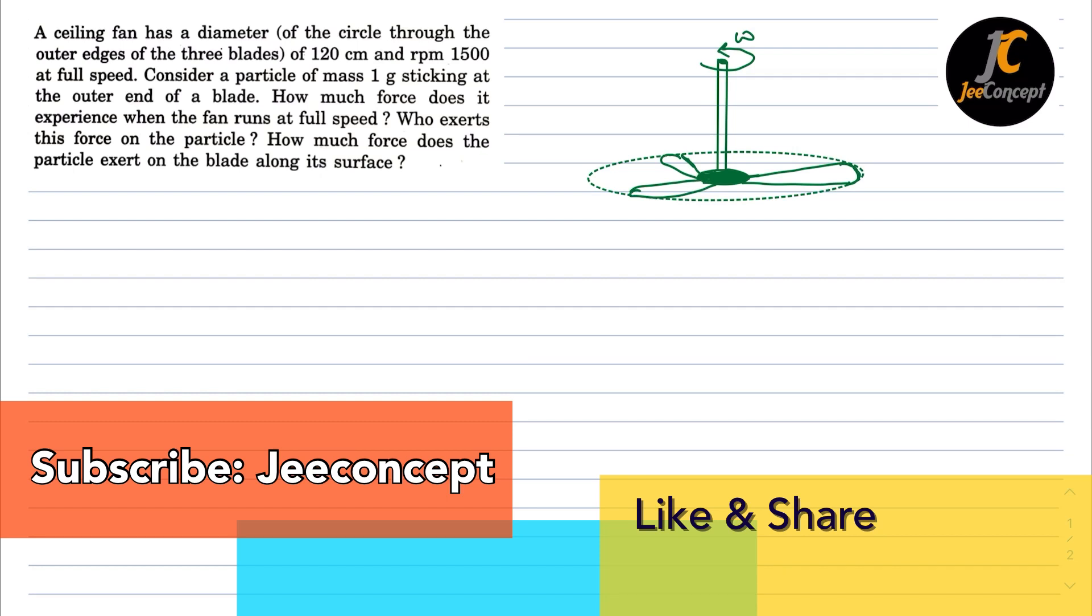Hello everyone, in this video we will find the solution of a problem which says: a ceiling fan has a diameter of 120 centimeters and RPM of 1500 at full speed. Consider a particle of mass 1 gram sticking at